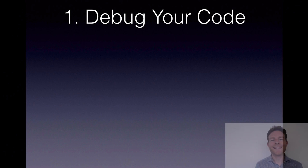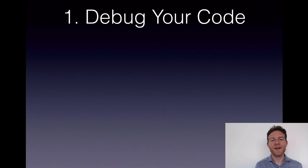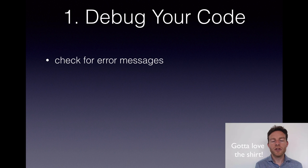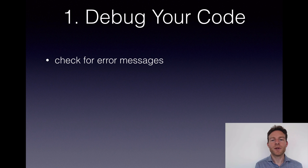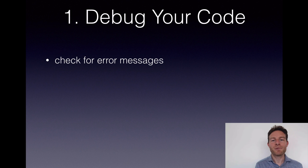Step one is debug your code. The usual thing is to check for error messages. Have a look in the compiler, in the browser, wherever it is that you're working to see exactly what's causing the problem. You can normally get the line number as well, and then you can use that to work out where the error is, add in the bracket or the semicolon or whatever it is that's missing, and move on with the course.